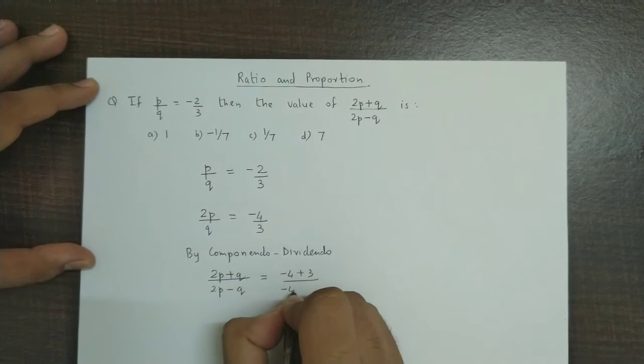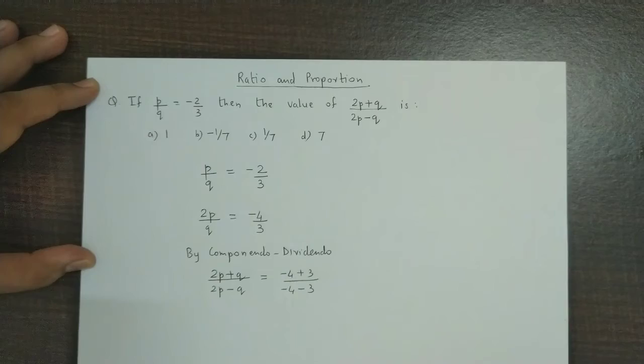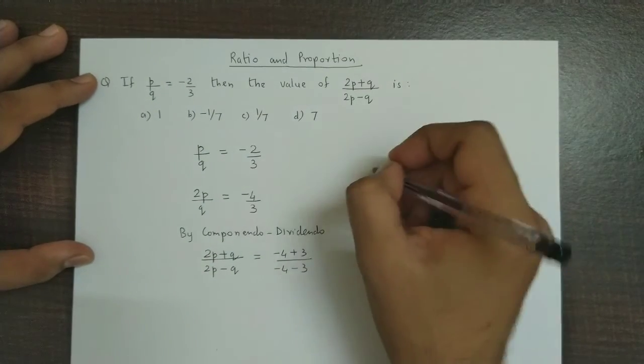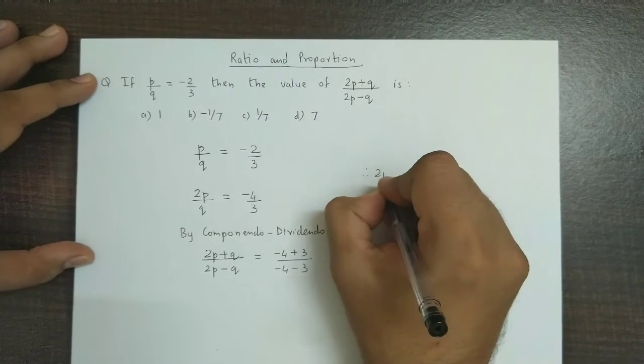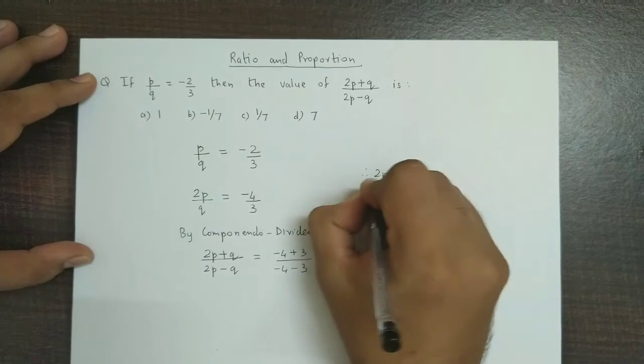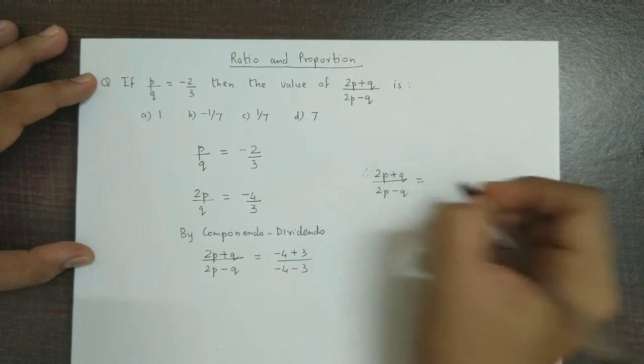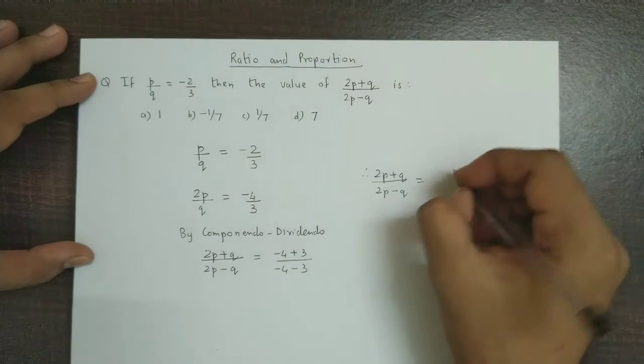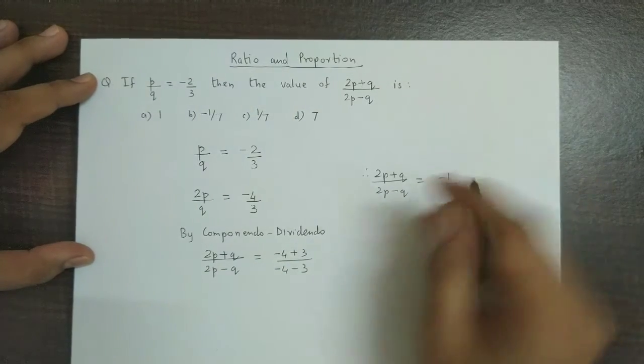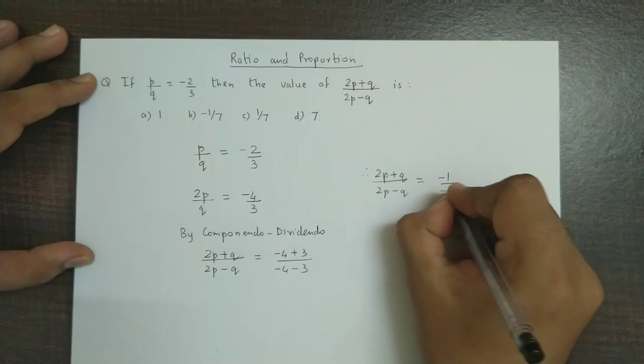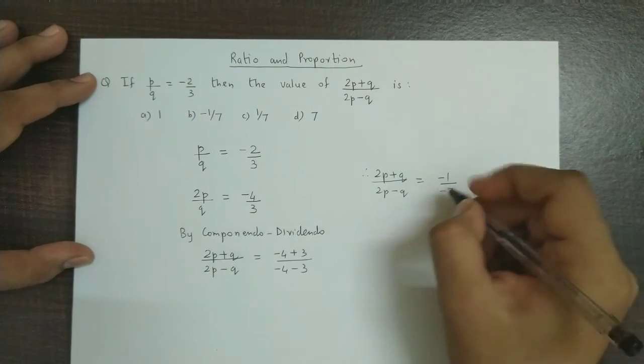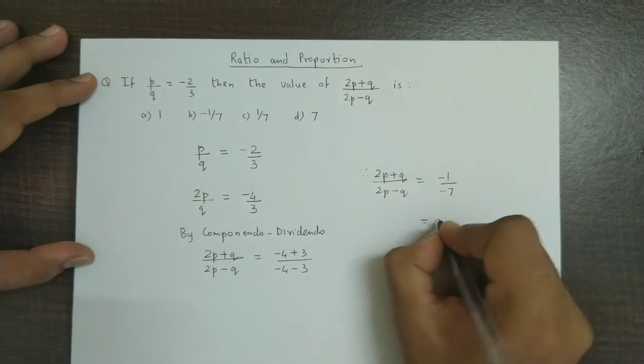Now this difference is -1 and this is -7, so the negative signs cancel off and we get the answer as 1/7, which is option C.